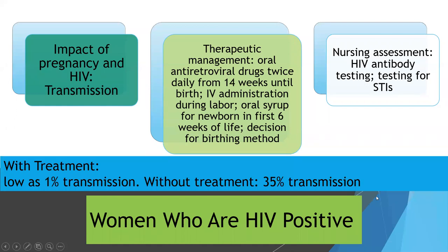For HIV positive mothers, antiviral medications need to continue daily from 14 weeks until birth, with IV administration during birth, and then the baby will have oral syrup. With treatment, we see transmission as low as one percent, which is amazing. Without treatment, it's upwards of 35% or more that babies will become positive.